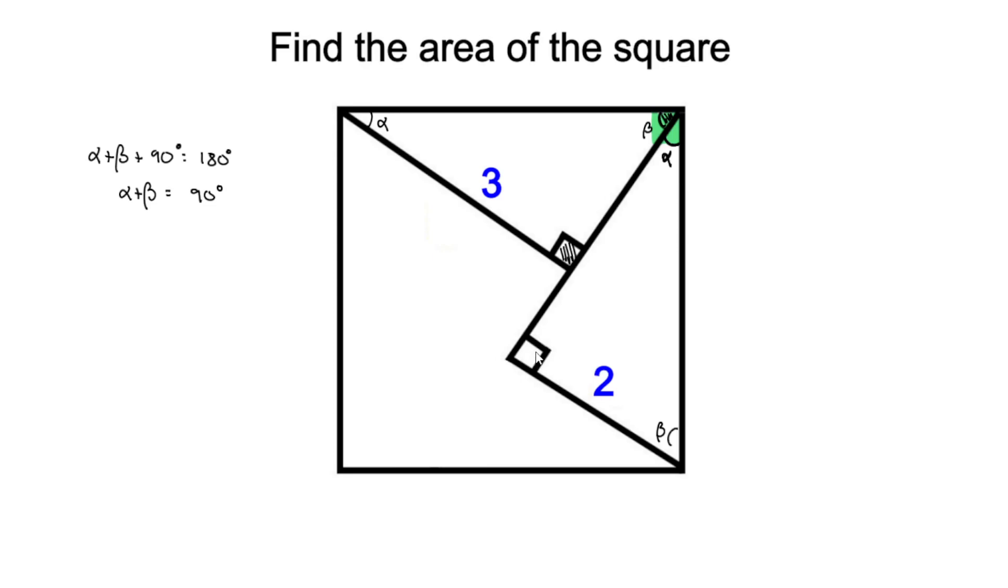And since our second triangle is also a right angle triangle, that means this angle here must be beta as well. So now that we have concluded that these two triangles are isometric, meaning they are identical to each other - they have the same shape and the same size.